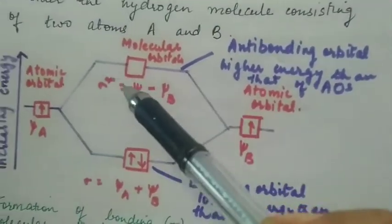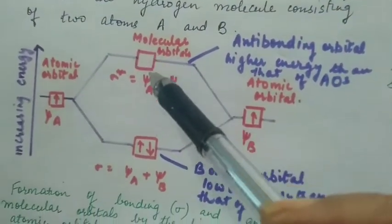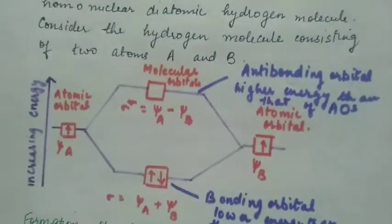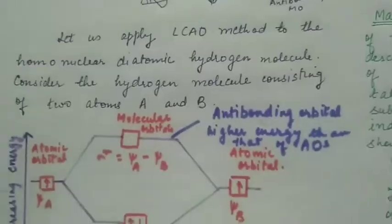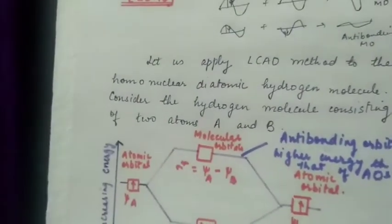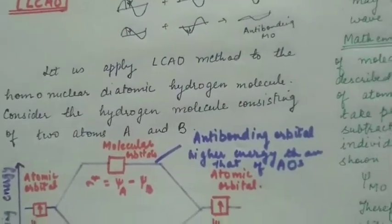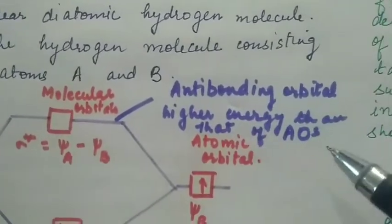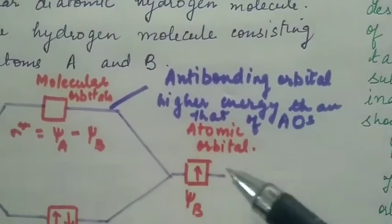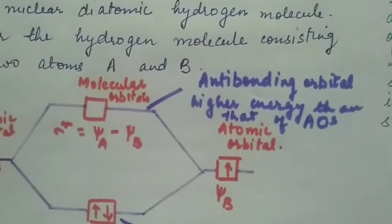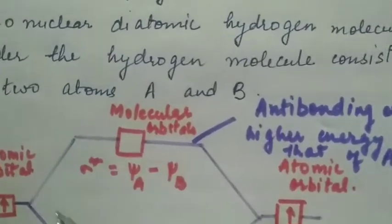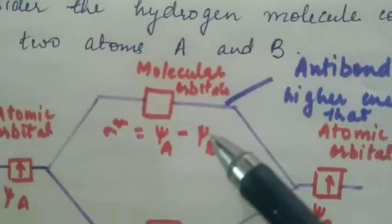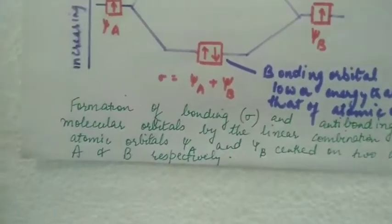The other molecular orbital is formed when destructive interference occurs, because the two wave functions are subtracted from each other. The resulting molecular orbital has energy higher than that of the atomic orbitals and is called the anti-bonding molecular orbital. It is represented by ψ*, so ψ* equals ψA minus ψB.